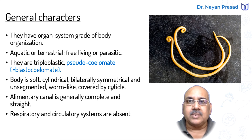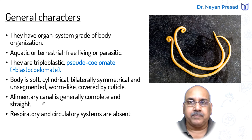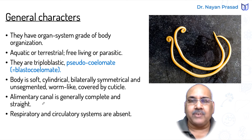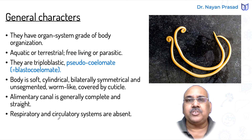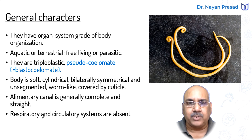The body is externally covered by a cuticle, which is a protective covering. The alimentary canal is generally complete and straight, running from mouth to anus. Respiratory and circulatory systems are absent — still not developed. Respiration takes place through the general body surface; however, the circulatory system is entirely absent in them.